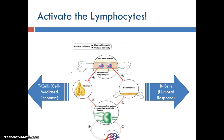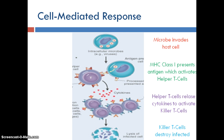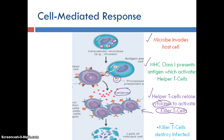Now we're onto the T cells and the cell-mediated response. A lot of these steps are similar, but here's where they differ from the humoral response. We have a microbe invading the cell, and an MHC is presented on the outside to tell the helper T cells that there's something in the cell that shouldn't be there. Those helper T cells are activated and release a cytokine. But now, instead of activating B cells, we're activating killer T cells. Those killer T cells now know what to look for — they know what MHC to look for.